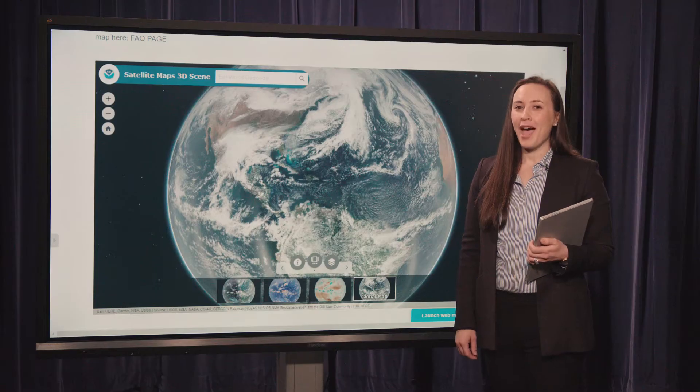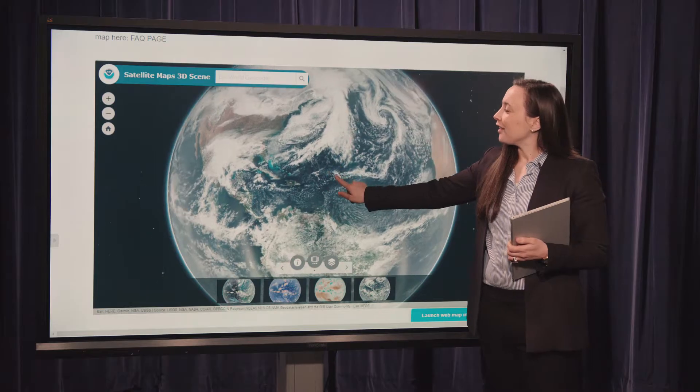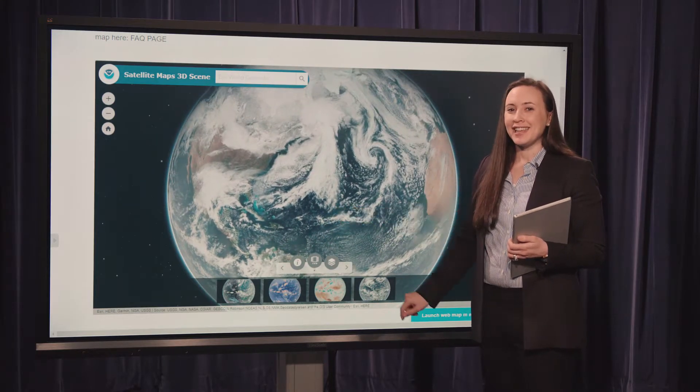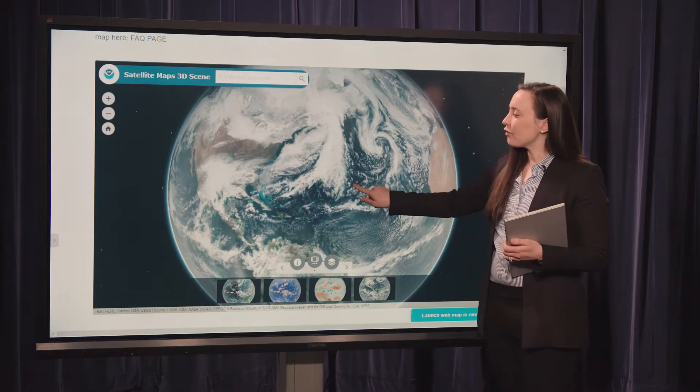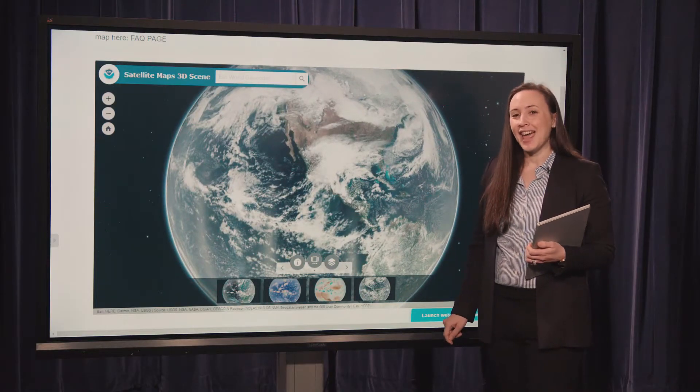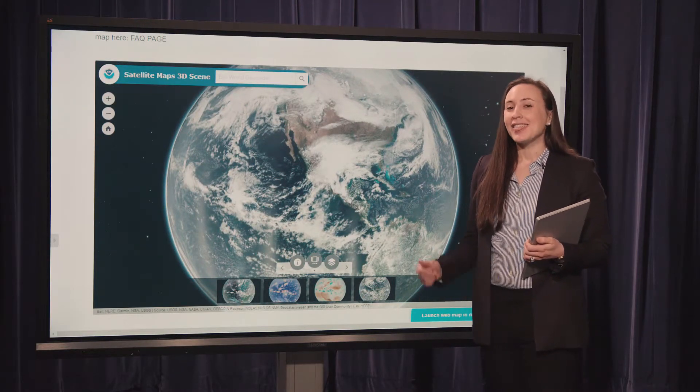NOAA has launched three new maps for you to view and interact with real-time satellite data. Now, from your personal phone or computer, you can see the latest satellite imagery on our website. Let me show you how.